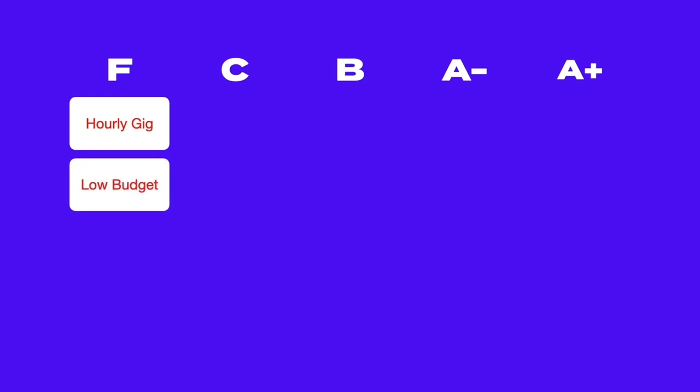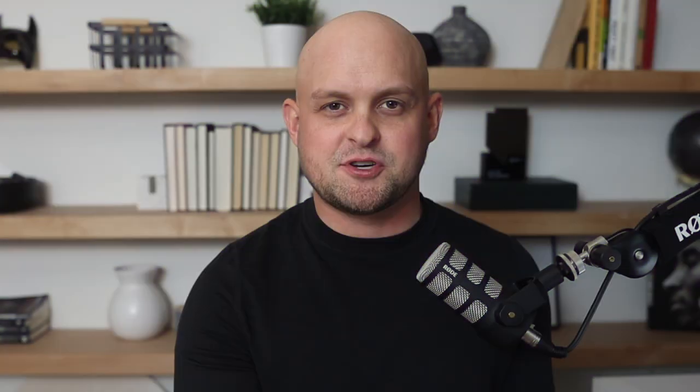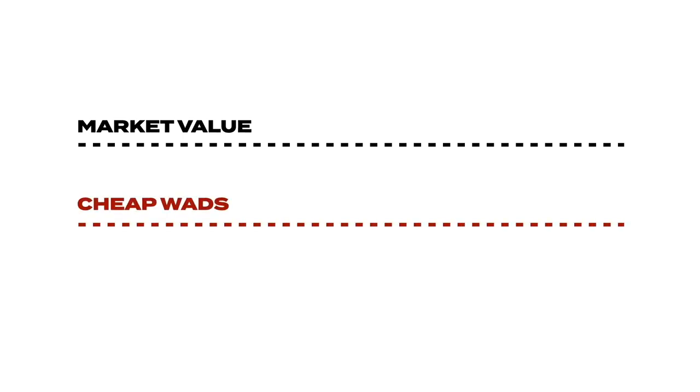The second business model is just being a low budget option. A lot of new designers do this because they think it's going to help them find more clients, so they find the standard market value and undercut that on their prices, becoming the cheapest, most affordable option for design. Being the cheapest option not only brands you as the lowest value, but it also attracts the worst types of clients. So at all costs, avoid these two business models.